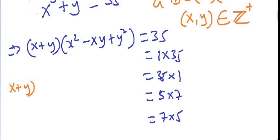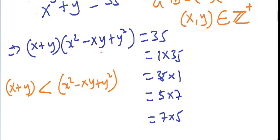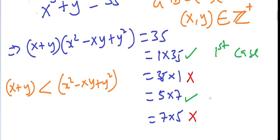Therefore the first factor must be smaller than the second factor. This means the pairs 35 times 1 and 7 times 5 are eliminated, since we need the first factor to be the smaller one. We are left with two cases to consider: 1 times 35, and 5 times 7.